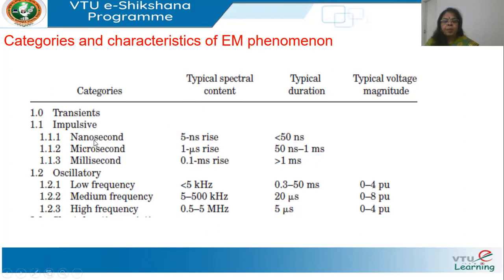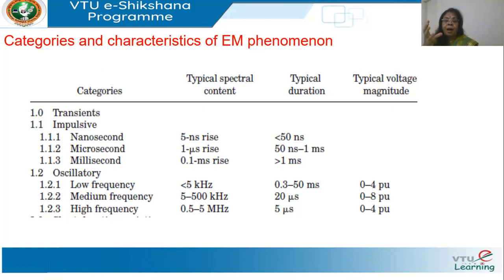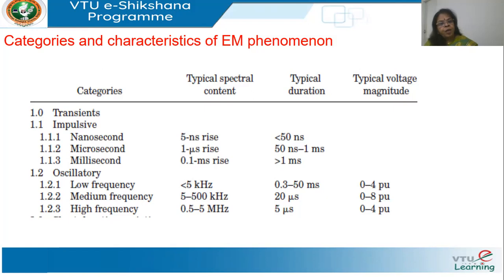If the duration is in nanoseconds — typically less than 50 nanoseconds — unless the energy in the transient is high enough to cause damage, you can neglect it. But if the energy is high, even 50 nanoseconds is sufficient to cause damage. The duration ranges are: less than 50 ns, between 15 ns to 1 ms, and greater than 1 ms.